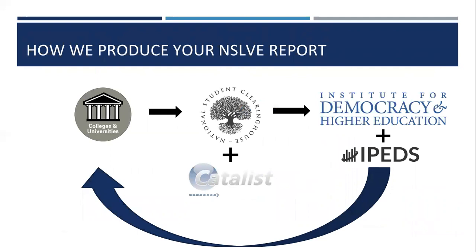Campuses choose to participate, and in doing so we are able to leverage data that you already send to the National Student Clearinghouse about your college students and their enrollment. We then merge that data with Catalyst, who provides the publicly available voter files. That data is then de-identified, so we do not use anything that would allow us to identify an individual student on your campus. For example, all student names are removed from the data as well as birth dates — we only receive a student's age at the time of the election. We receive this de-identified data that has both your enrollment records married with the publicly available voter file, and we then append IPEDS data so that we can get some additional features about your institution.